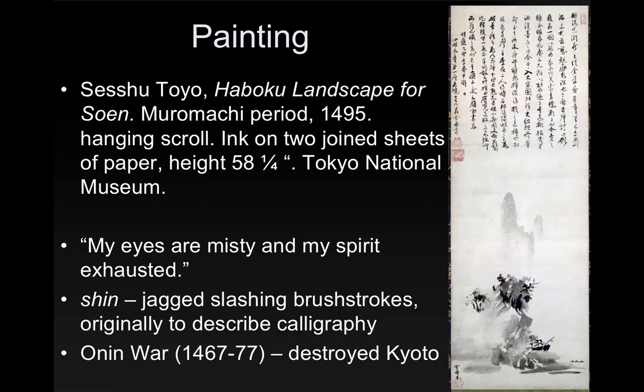The Onin War from 1467 to 1477 destroyed Kyoto. Occasionally scholars say that Sesshu's experience in the Onin War is part of the reason why these pieces are aggressive or melancholy, which I don't necessarily agree with. I think the stylistic influence from people like Ma Yuan and developments in calligraphy are just as likely to have influenced Sesshu. Though perhaps the somewhat tragic stories about Sesshu may be influenced by experiences that not just Sesshu, but others, had during the Onin War.